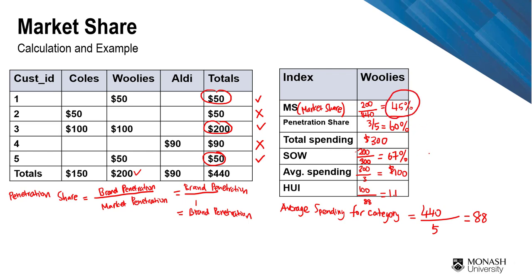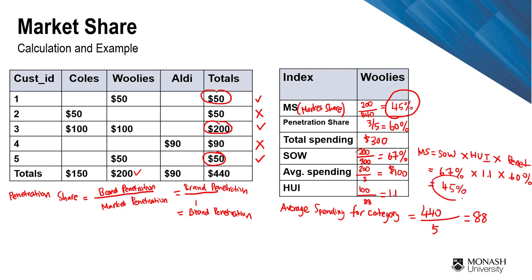To conclude, we can verify: market share equals SOW times HUI times penetration share. So 67% times 1.1 times 60% gives 45% — the same answer as the direct market share calculation. This confirms the formula works correctly.